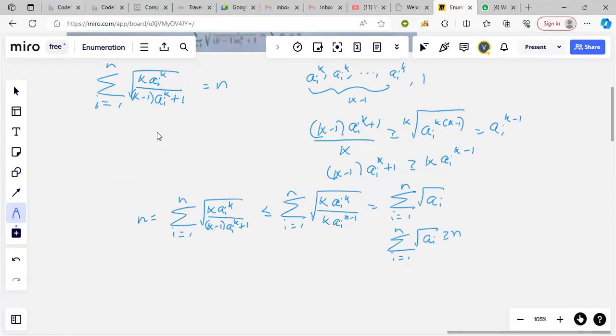What we do is apply RMS inequality. What we can get is that square root of a 1 plus square root of a 2 plus square root of a n, whole squared, is at most n times a 1 plus a 2 plus dot dot dot. This follows from Cauchy-Schwarz or RMS inequality, and this is equal to n squared.